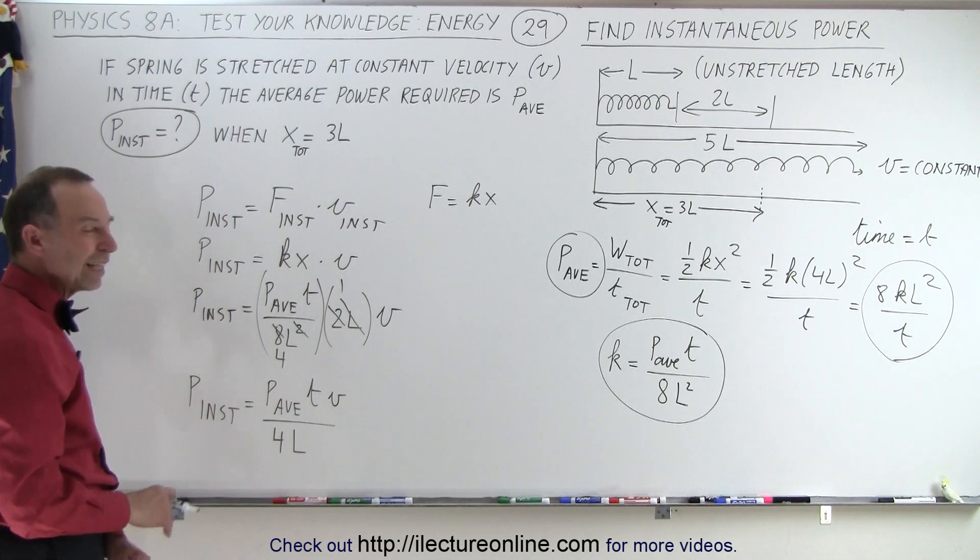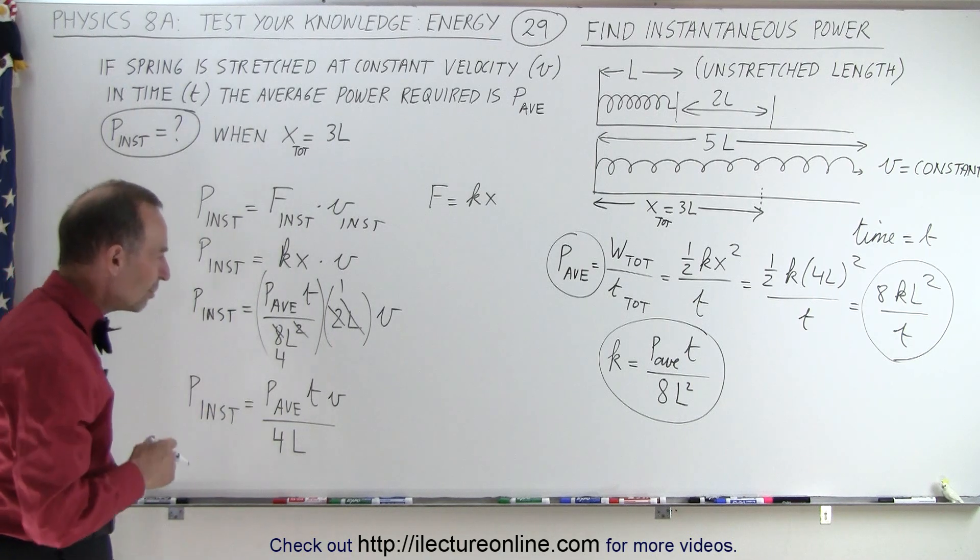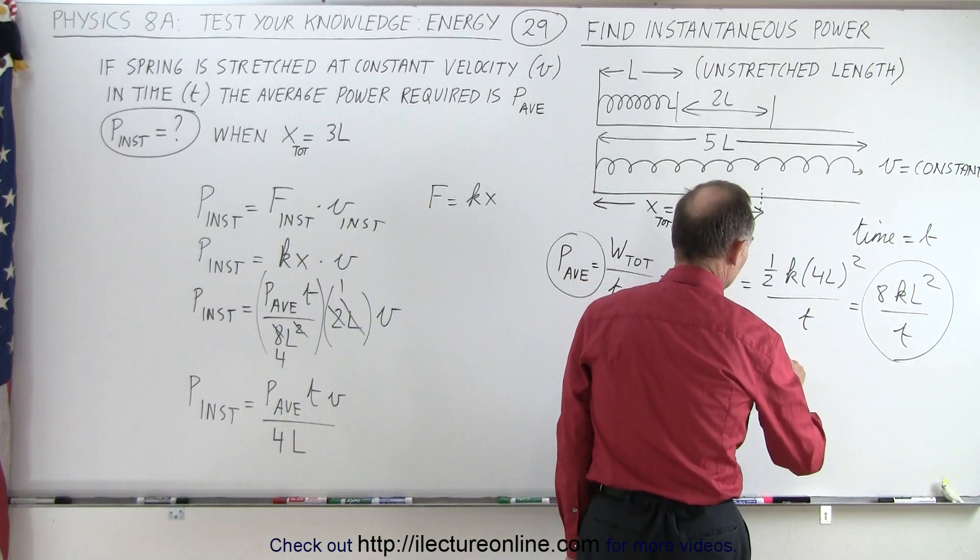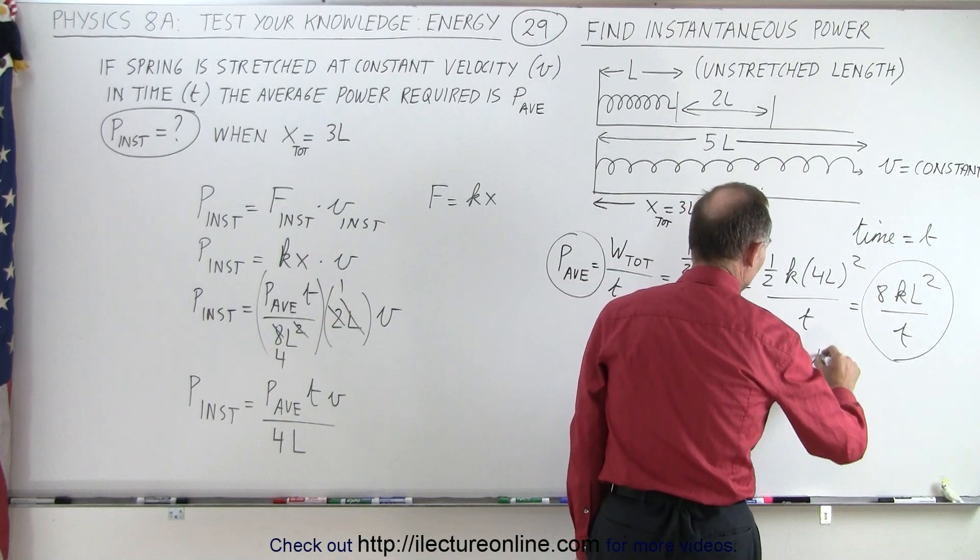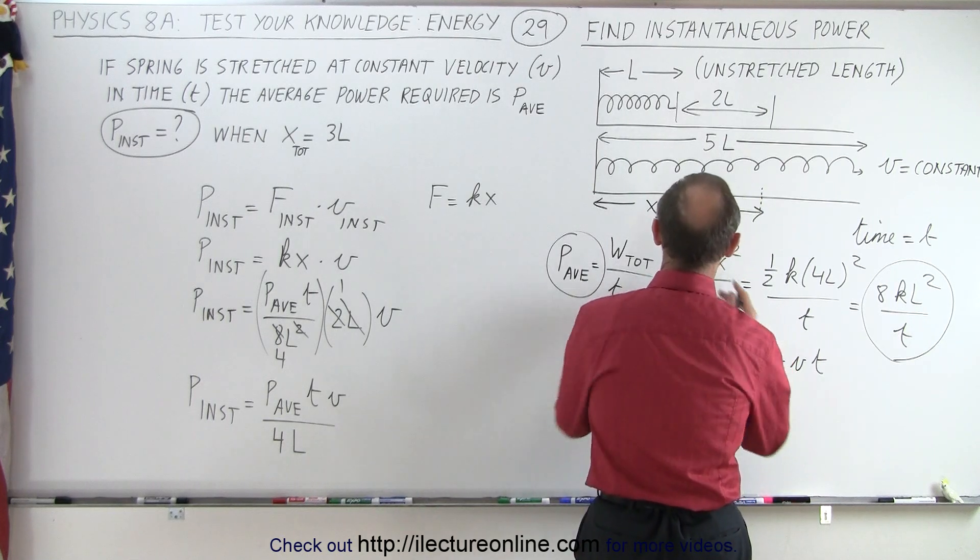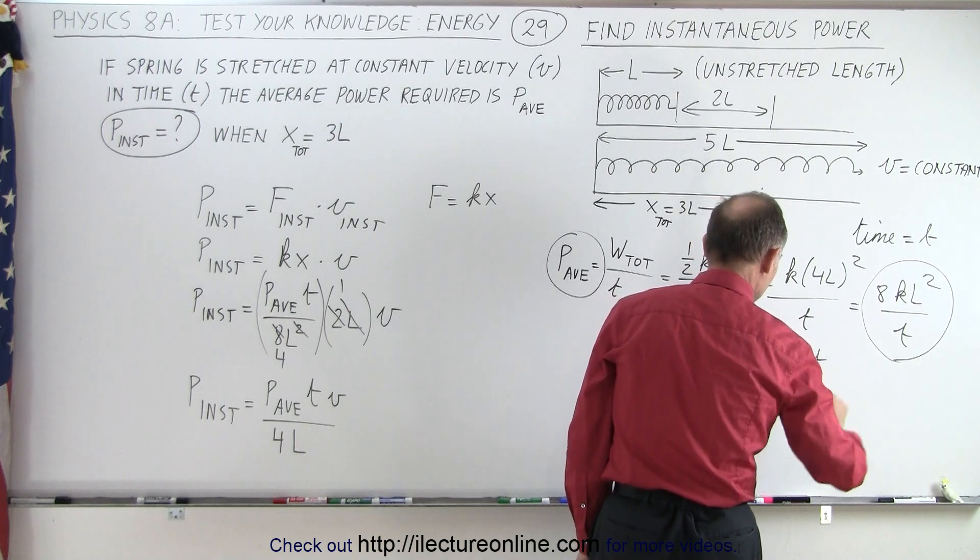Now, I guess we can relate V and T. So we can either keep the T or we can keep the V, but notice that distance equals velocity times time, which means the distance to stretch at 4L, we can say 4L is equal to V times T.